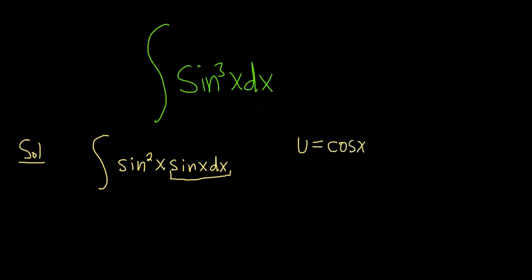So again, this is all from memory. If you have odd powers of sine and cosine, save a copy of the odd one, and then u is the other one. So we saved a copy of sine, and then u is cosine.